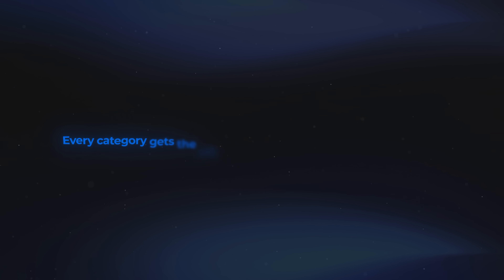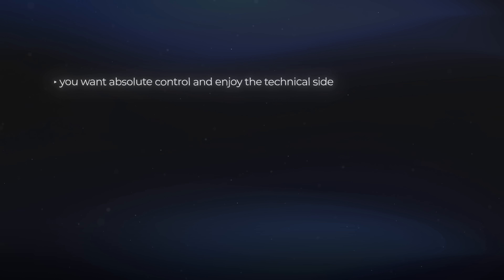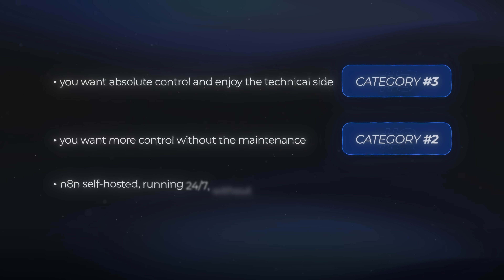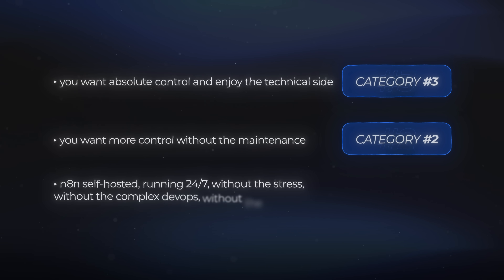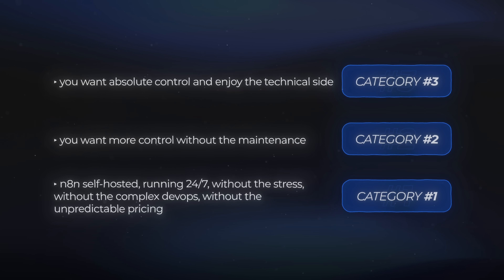So with all of that laid out, here is the simple conclusion: every category gets the job done — it just depends on what you need. If you want absolute control and enjoy the technical side of things, category three is probably where you'll land. If you want a little more control without the maintenance, category two is going to feel really nice. If you want NA10 self-hosted, running 24-7 without the stress, without the complex DevOps, and without the unpredictable pricing, then category one ends up being the most practical choice — and that's exactly why I go with this option myself.